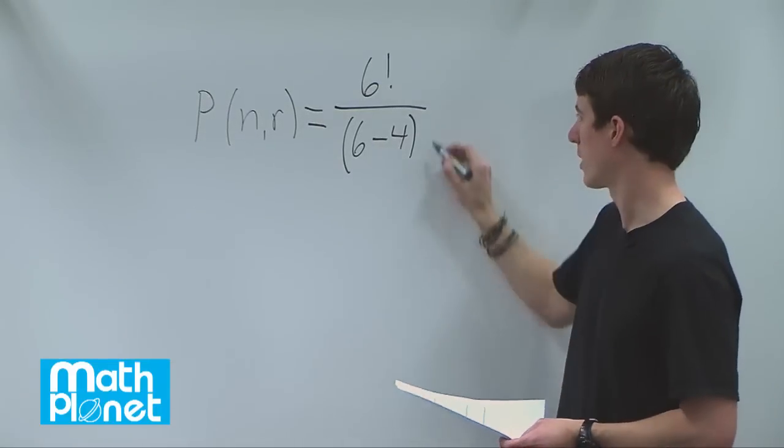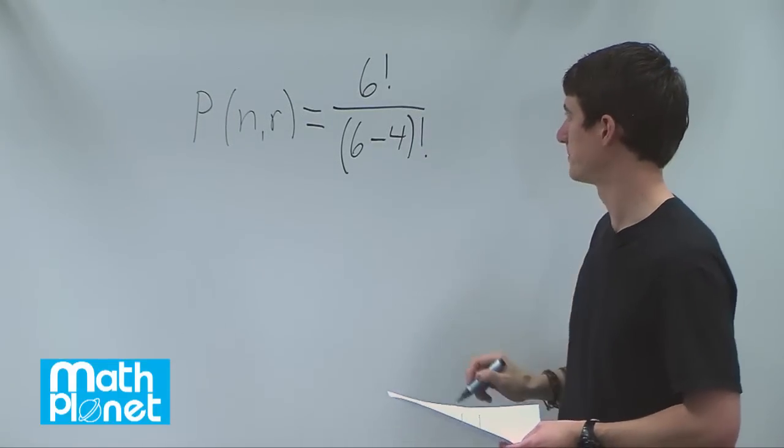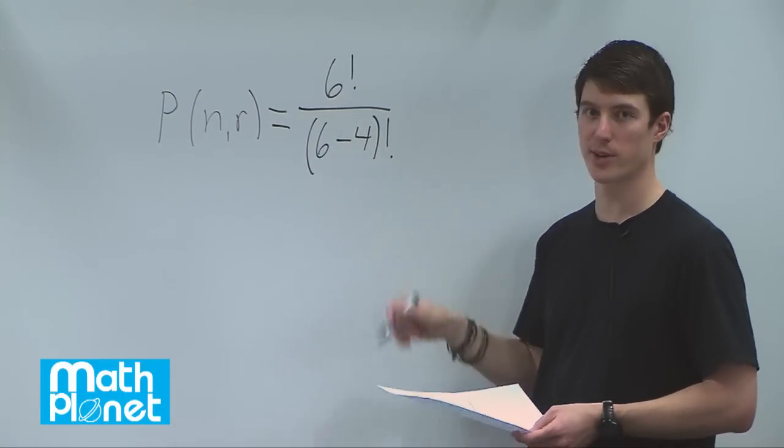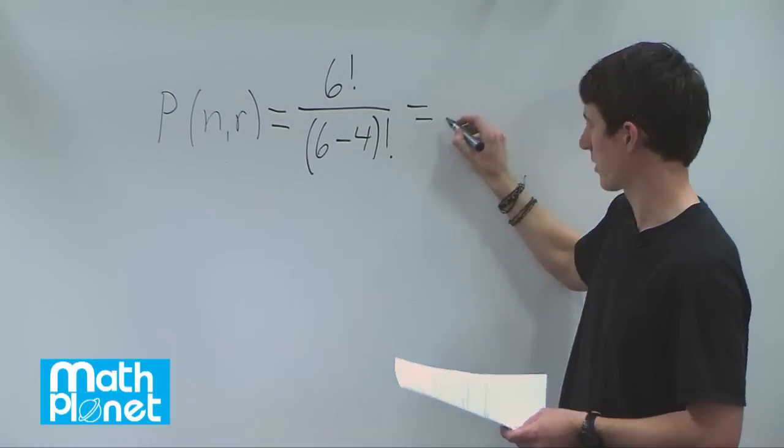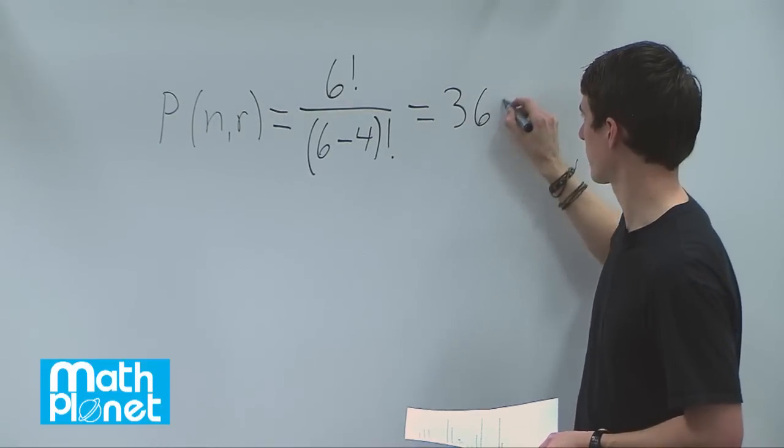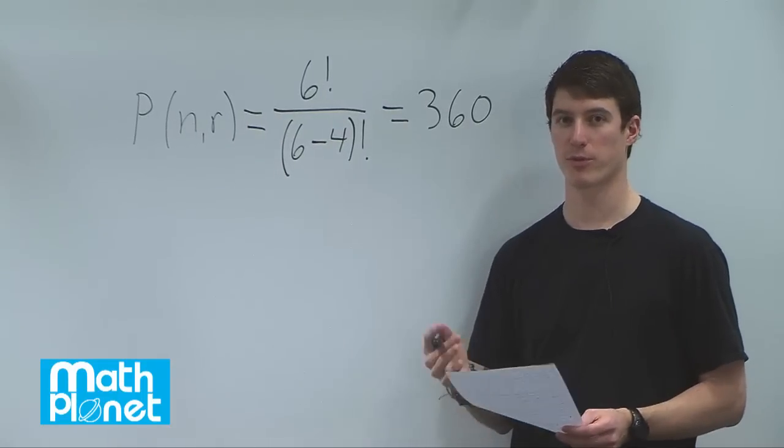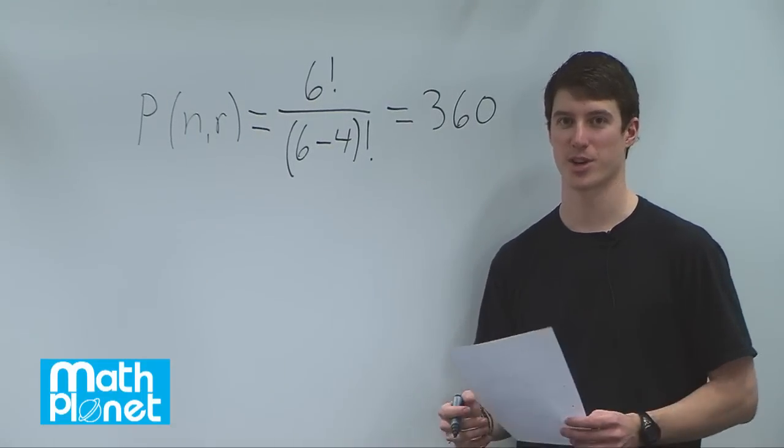So this is going to reduce the number after all, and this is also a factorial. So six factorial over what this is going to be is two factorial, six factorial over two, that just gives us 360. So there are 360 different permutations for four friends around a table with six chairs.